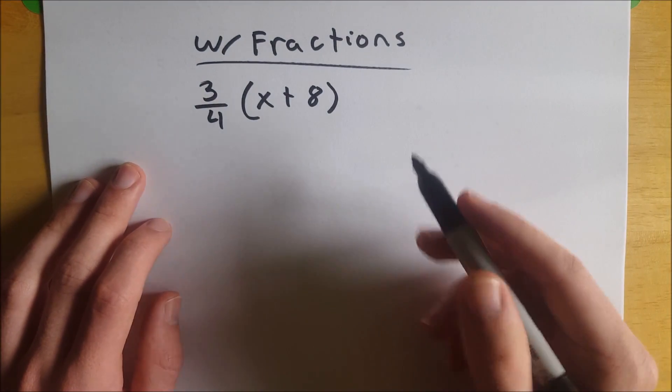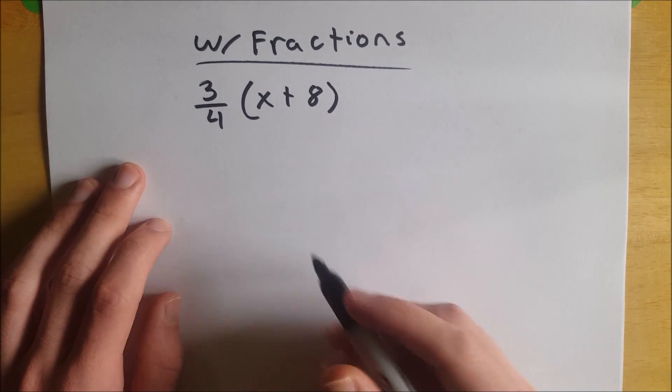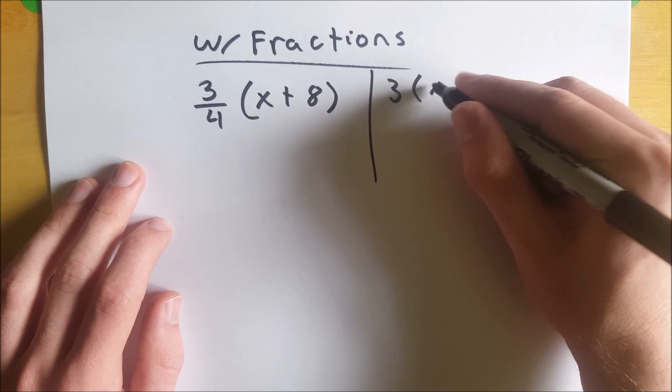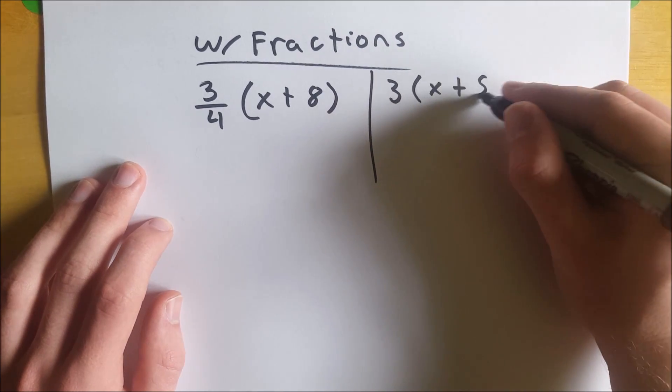So how do we do this? Well, quickly, let's just do an example of this without the fraction so we get a look at that. Let's say we had to do 3 times x plus 8.